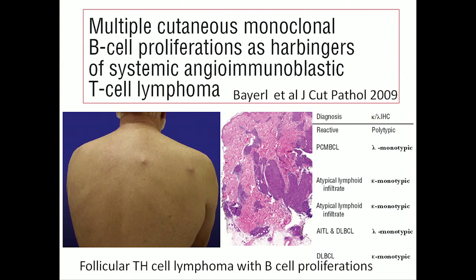Many marginal zone lymphomas often have a predominance of CD4 cells. In one case we did flow cytometry and found a big predominance of CD4 cells and often small amounts of T-cell clones. So marginal zone lymphomas in the skin are often driven by T-cells — this could be related to autoimmunity or could be associated with a peripheral T-cell lymphoma.